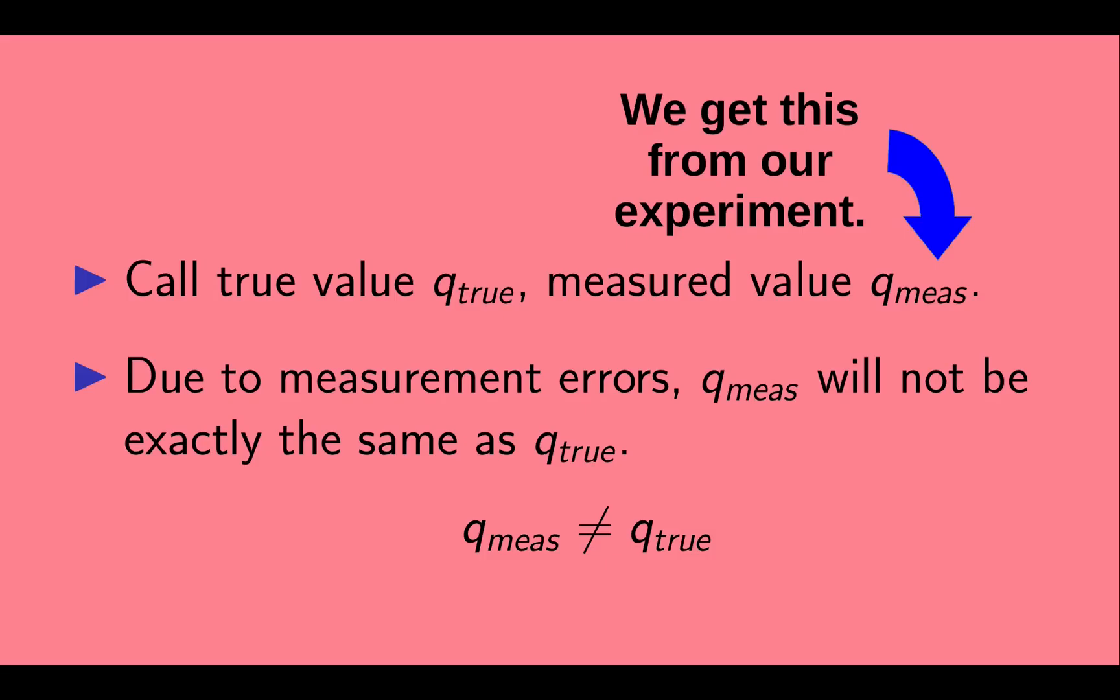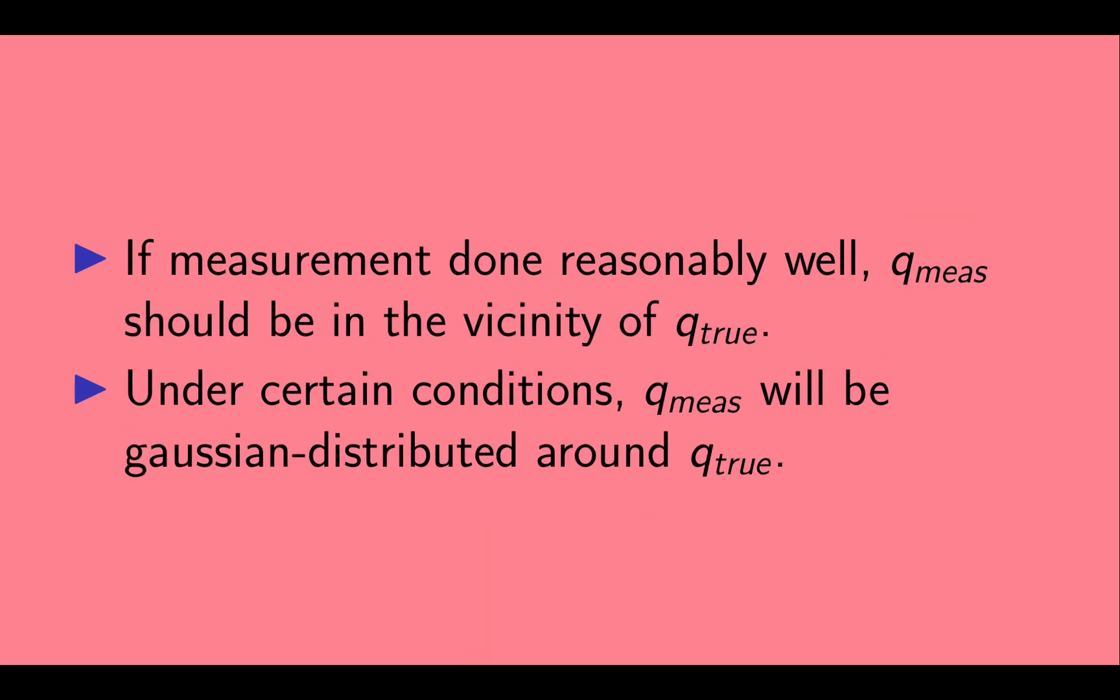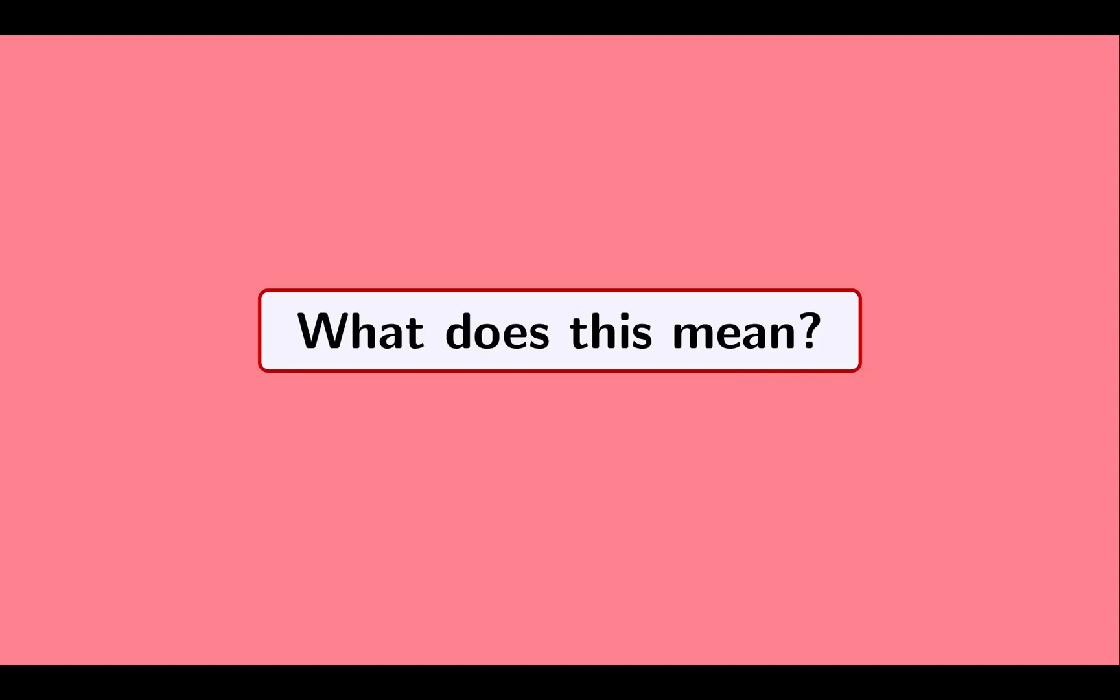Now due to measurement errors, q measured will not be exactly the same as q true. But if the measurement is done reasonably well, q measured should be in the vicinity of q true. And under certain conditions that we'll see in later videos, q measured will be Gaussian distributed around q true. Okay, what does that mean?